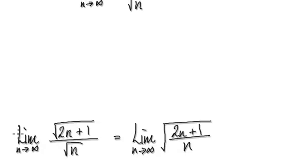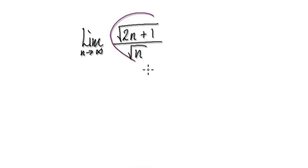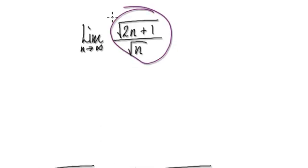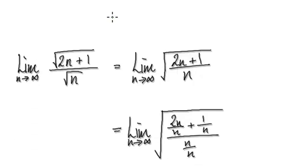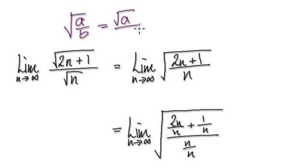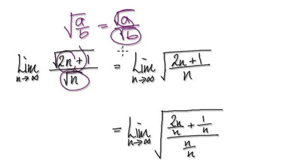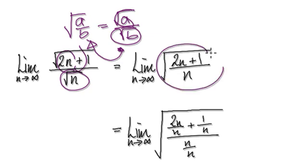So it's just a matter of rearranging this. Remember, if you have root a over b, that's the same as root a over root b. So here you've got this thing here, and you're traveling from here to here, so that will then give us this.